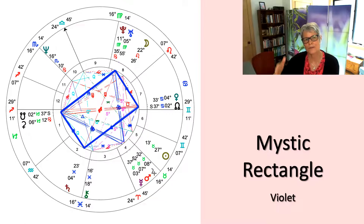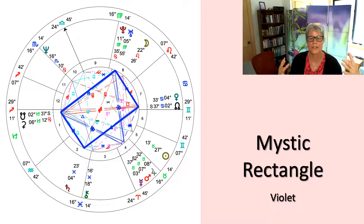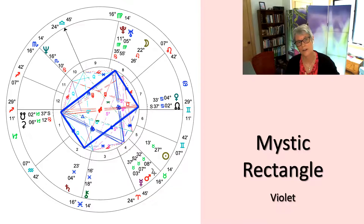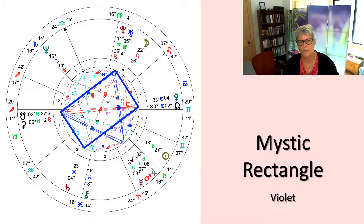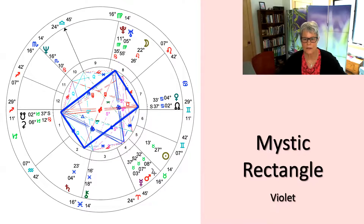Pisces, being the 12th sign, is representative of endings and beginnings. Part of those endings is the release, the shedding of the shackles that prevent one from accessing divine consciousness. In Violet's case, this is a significant part of her Mystic Rectangle — asking her to rise not only in spiritual consciousness but to integrate the esoteric as part of her spiritual path, and integrating that into her own boundaries.